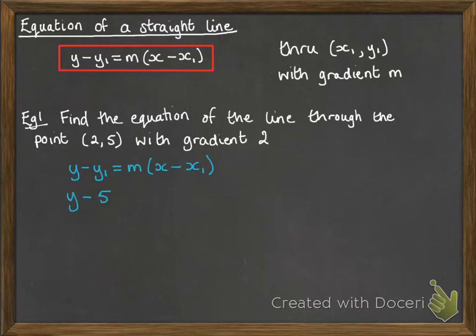First of all, put in y1. That's the y-coordinate of the point that you've been given. In this case, it's 5. Next, we need to put in the gradient, which we're told is 2. And then, finally, put in the x-coordinate of the point, which is also 2 in this example. And then, we multiply out that bracket, rearrange and tidy up that equation. So, the equation of our line is y equals 2x plus 1.